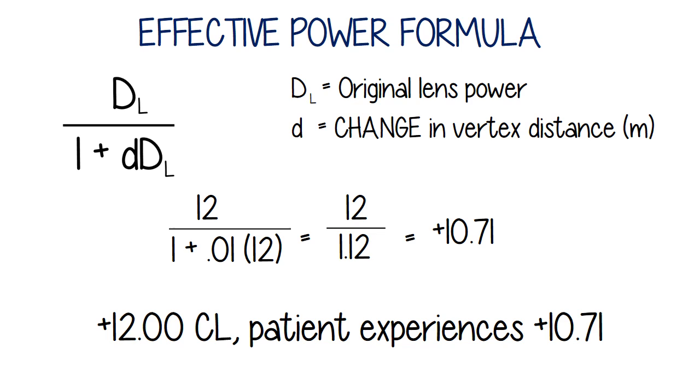So which prescription is correct? What is this patient's actual prescription? They're both correct. The prescription depends on the vertex distance. That's the whole point I'm trying to make here. And it especially depends when you get up into those higher prescriptions. With the lower ones, not so much. We sort of ignore it. It's not enough to matter.